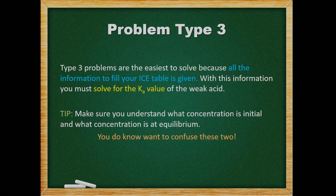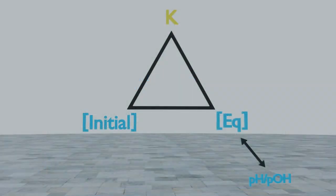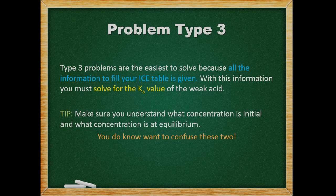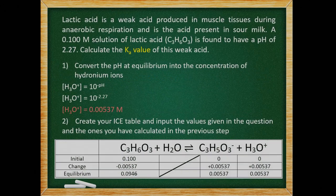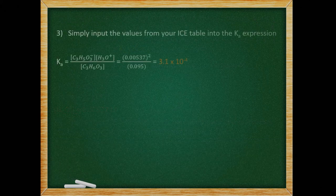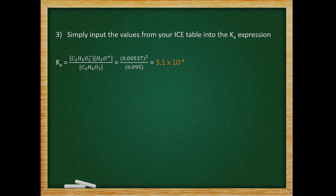Type 3 problems are actually the easiest to solve because all the information to fill your ICE table is given. We have our initial and equilibrium concentrations and we need to use them to solve for the Ka value of the weak acid. Because there are no unknown values in our ICE table, we need to make sure we understand what the initial and equilibrium concentrations are. A 0.100 molar solution of lactic acid is found to have a pH of 2.27. We must calculate the Ka value of this weak acid. The pH that we are given allows us to find our equilibrium concentration of hydronium. The molarity given for lactic acid is its initial concentration. We must subtract the change of hydronium from our initial concentration of lactic acid to get its equilibrium concentration. We can then plug our values into the Ka expression, which gives us our Ka value.